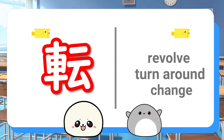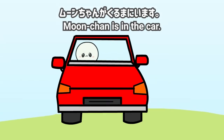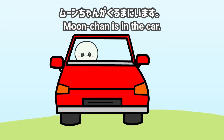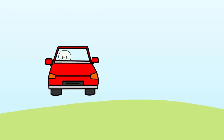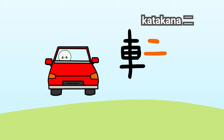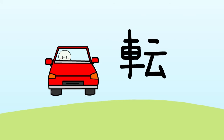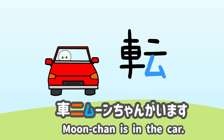And this image might help you memorize this kanji. Moon-chan ga kuruma ni imasu — Moon-chan is in the car, and the car is revolving. This is kanji kuruma meaning car, and this is katakana ni, and katakana mu as in Moon-chan. Kuruma ni Moon-chan ga imasu.